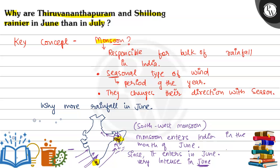To summarize: the key concept is the monsoon, which is responsible for rainfall in India. The monsoon is a seasonal type of wind that changes its direction with the season. The reason for more rainfall in June than July is that the monsoon is very intense when it first enters India in June. This is our final answer.